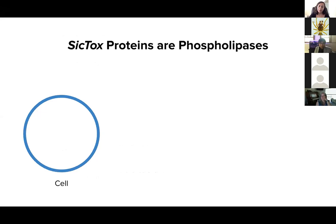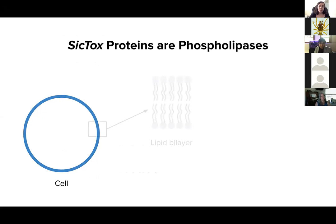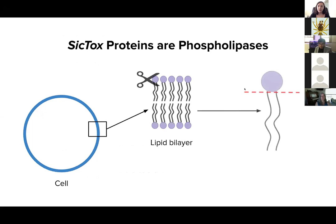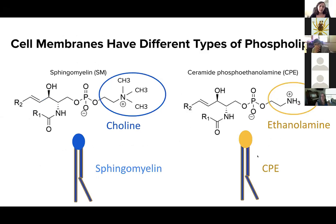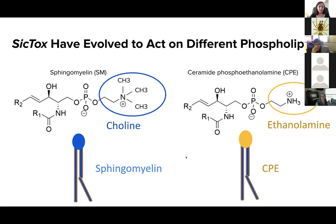CICTOX proteins are phospholipases, meaning that they target the cell membranes of cells. If we zoom in on that membrane, we can see that it's a lipid bilayer composed of molecules called phospholipids that have a polar head group and fatty acid tails. CICTOX proteins will cleave that polar head group from the tails, which disrupts membrane organization, which is detrimental to both the cell and the organism. Interestingly, there are different types of phospholipids that make up cell membranes throughout different organisms. We focus primarily on two: sphingomyelin and ceramide phosphoethanolamine. Their structures are quite similar except for their head groups — sphingomyelin has a choline head group and CPE has an ethanolamine head group. These CICTOX proteins have actually evolved to act on different phospholipids in varying manners.